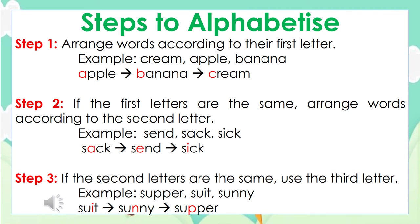Step number three: if the second letters are also the same, we use the third letter. For example, we have the words supper, suit, and sunny. As you can see, the first and second letters are the same, so we arrange by the third letter and we get suit, sunny, and supper.